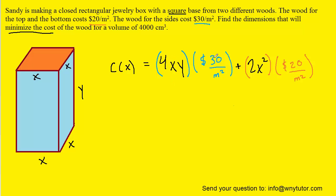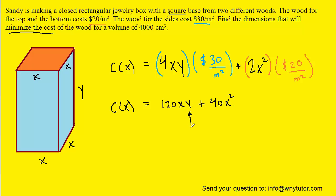We can simplify the total cost function a little by multiplying 30 by 4 and 20 by 2. The only problem is that it has two variables, both X and Y. We need to find an expression for Y to substitute in, so we turn to the volume of the box.